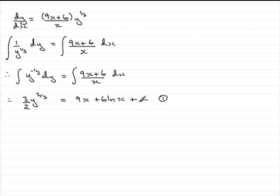Now to work out the constant, we're given that when y is 8, x is 1. That means we can substitute these values into equation number 1 and work out what the constant c is.